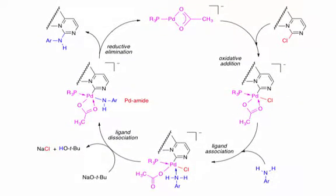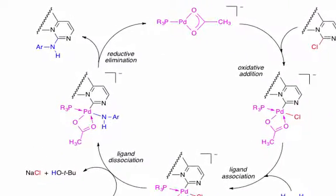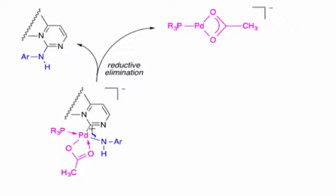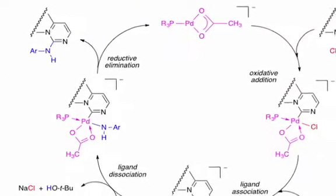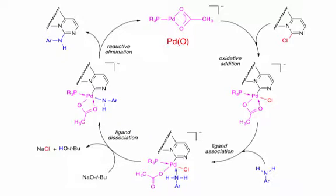The catalytic cycle then concludes with reductive elimination. In the reductive elimination step, a nitrogen-carbon bond is formed, with an electron pair from the carbon-palladium bond going on to palladium. This releases the organic product and regenerates palladium as a palladium zero anionic catalyst for another cycle of catalysis.